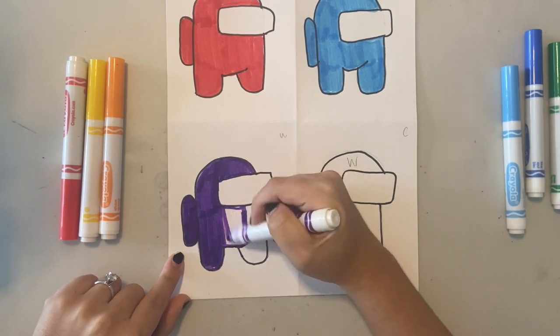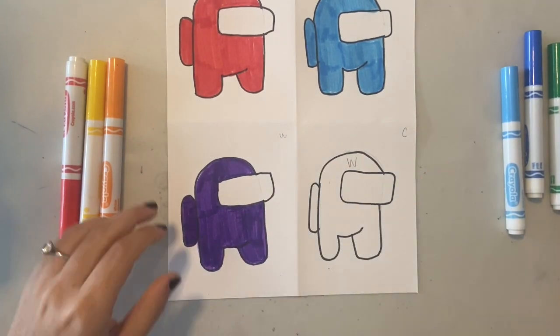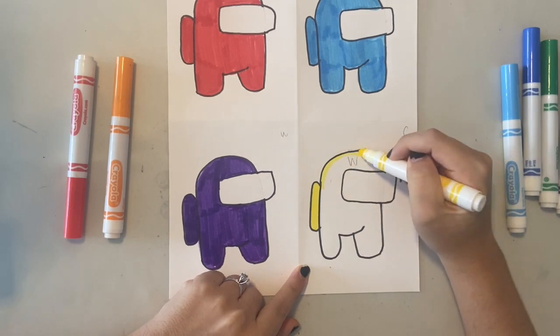Now since I want two warm and two cool, I'm going to choose a warm color, yellow, for my last character.